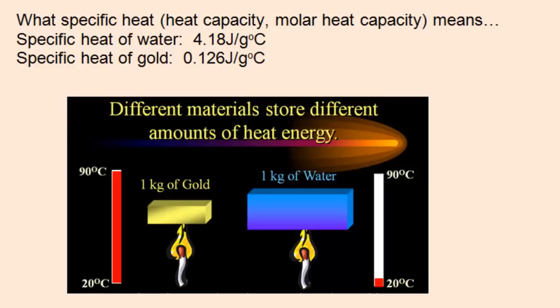Water has a relatively high specific heat, 4.18 joules per gram degree C, and that of gold is only 0.126 joules per gram degree C.